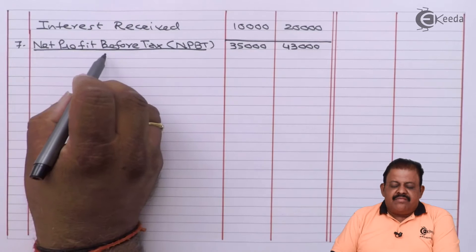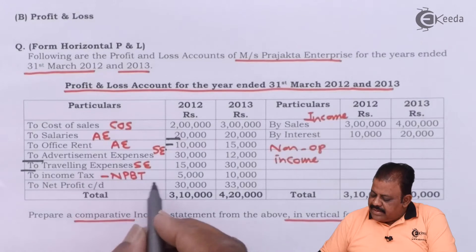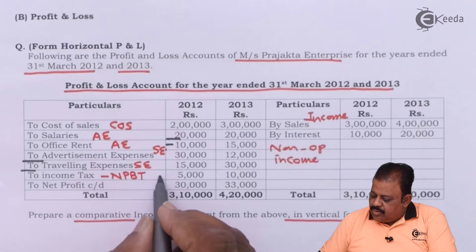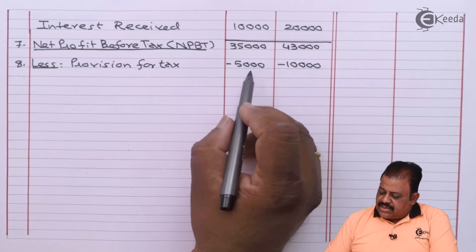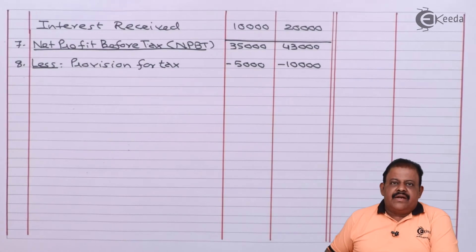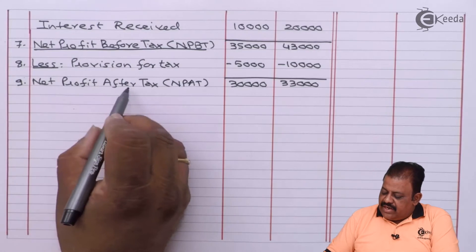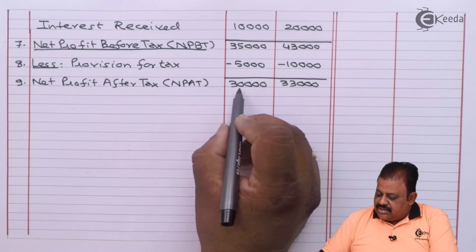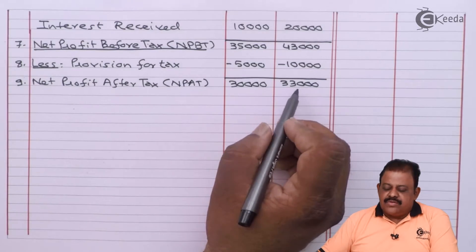From net profit before tax we deduct provision for tax. The income tax provision amounts are 5,000 and 10,000. After deducting these, we get net profit after tax of 30,000 and 33,000.